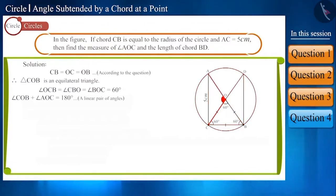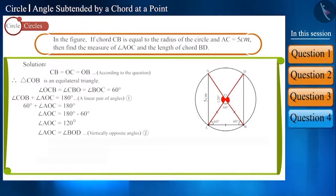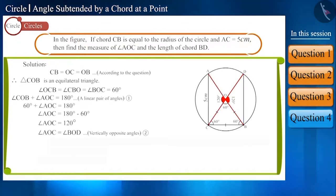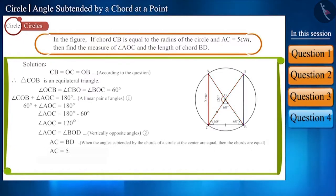According to the figure, angle AOC and angle COB make a linear pair of angles. Thus, by placing the measure of angle COB, we get the measure of angle AOC as 120 degrees. Angle AOC and angle BOD are vertically opposite angles, so they are equal. Angle AOC is the angle subtended at the center by chord AC, and angle BOD is the angle subtended by chord BD. Since these angles are equal, chord AC and chord BD will also be equal. We are given chord AC as 5 cm, so chord BD will also be 5 cm.